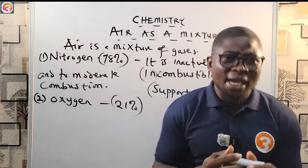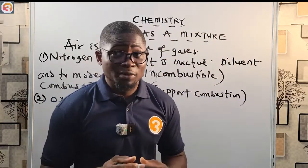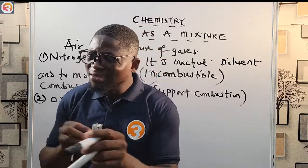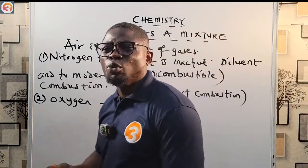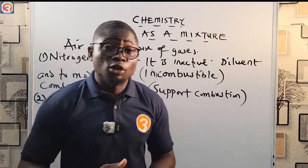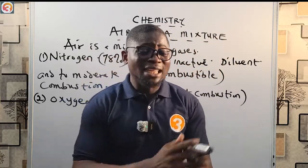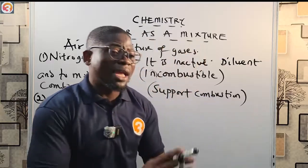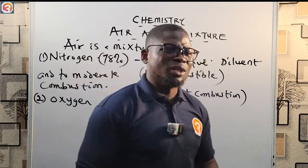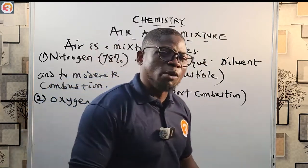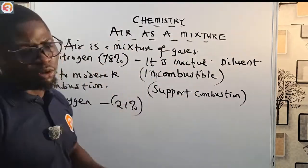If you try to light a candle in a room where there is no air at all, it will not come on, because there is a component of air that supports burning — that supports combustion. That component of air that supports combustion is oxygen. Oxygen is very, very active. It supports processes like combustion and rusting, and it is required for respiration in living things.